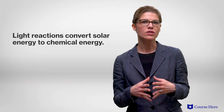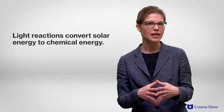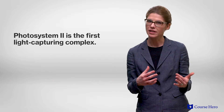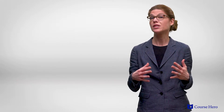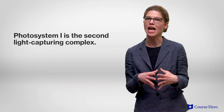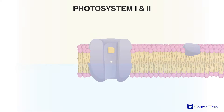The light reactions convert solar energy to chemical energy, and this is made possible by the two photosystems located in the thylakoid membrane of the chloroplast. The two photosystems are named in the order of their discovery. Photosystem II is the first light-capturing complex, and photosystem I is the second. Each photosystem consists of a light-harvesting complex, which is made up of a group of pigment molecules surrounding a reaction center complex.